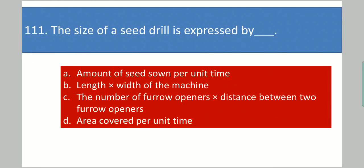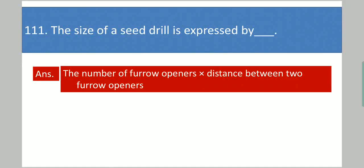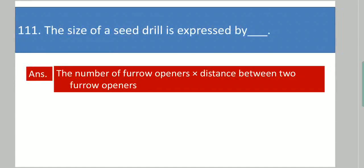Next question: The size of a seed drill is expressed by dash. Your options are: amount of seed sown per unit time; length times width of the machine; the number of furrow openers times distance between two furrow openers; area covered per unit time. Your answer is the number of furrow openers times distance between two furrow openers.